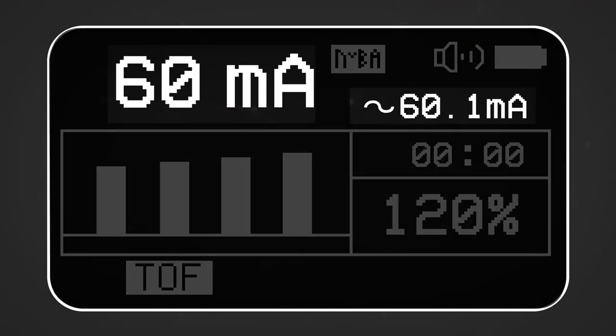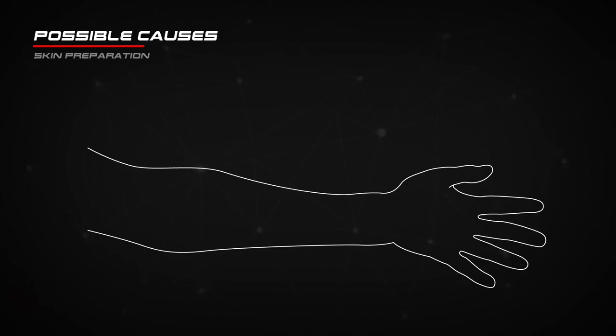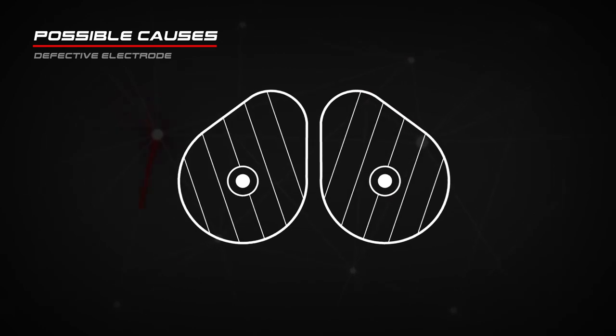If the current delivered is much less than the current setting, there's a problem with the electrode skin interface. Possible causes include a need for skin preparation or a defective electrode.